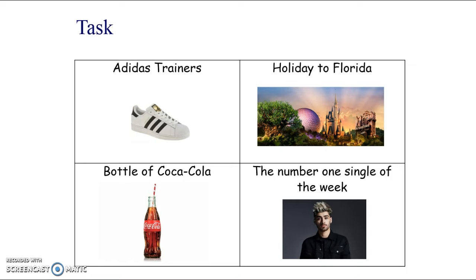When I get students thinking about place, I ask them all the different places they could buy certain products. A bottle of Coca-Cola could be bought in so many different places — restaurants, cinemas, train stations, newsagents, supermarkets. You can also buy it online through retailers like Asda or Sainsbury's, but there's no mechanism to order directly from the Coca-Cola company; you always go through other retailers.